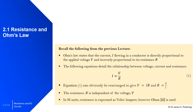Looking at resistance and Ohm's law — as a recap from the previous lecture, Ohm's law states that current I is equal to V over R, where V is voltage and R is resistance. This can be rearranged into various forms. The unit of resistance is Ohms.